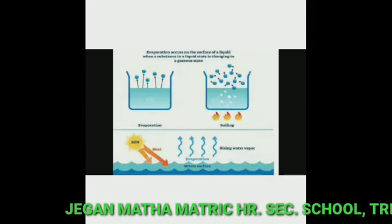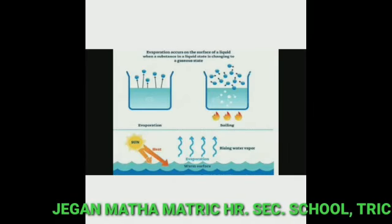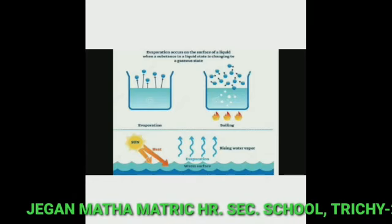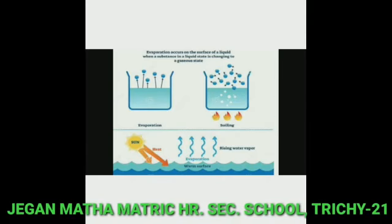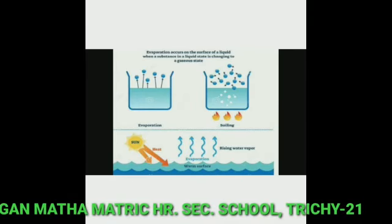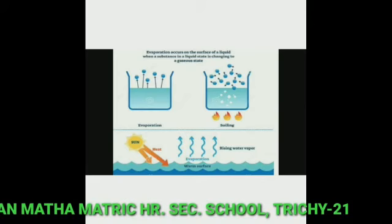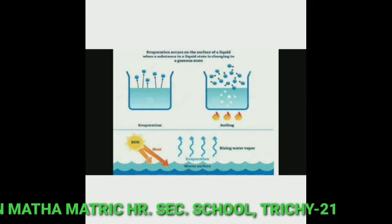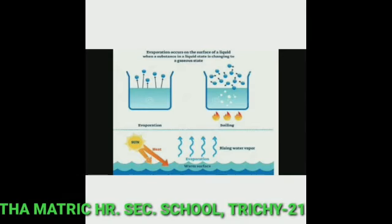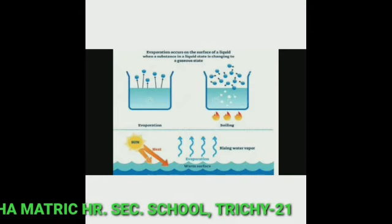Evaporation: This process in which water is changed into water vapor by the heat of the sun is called evaporation. It takes place from the surface of earth, rivers, oceans, lakes and ponds. Plants also release water by transpiration.